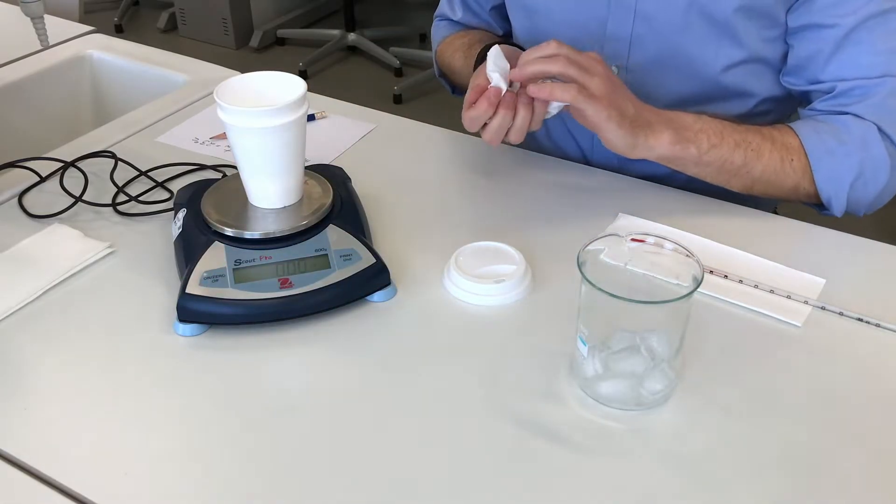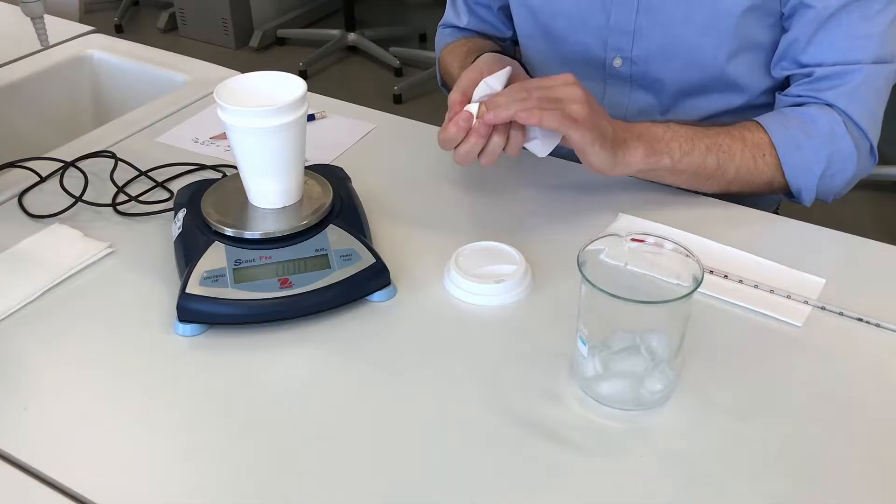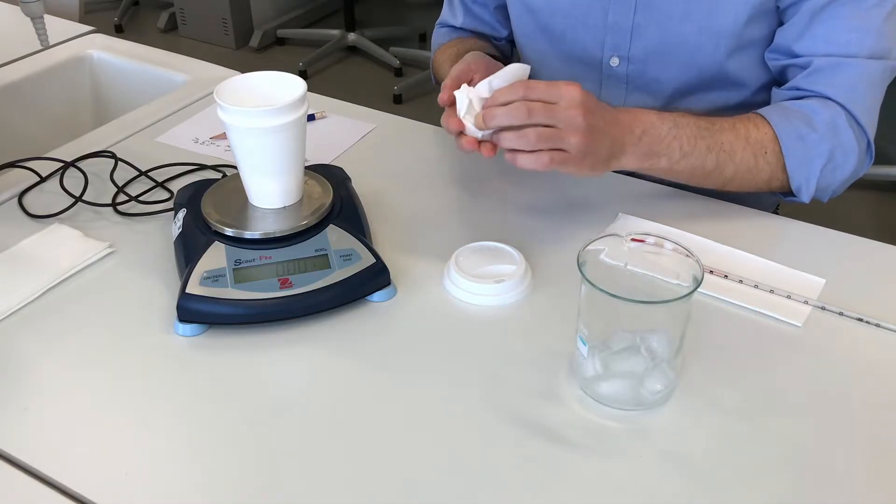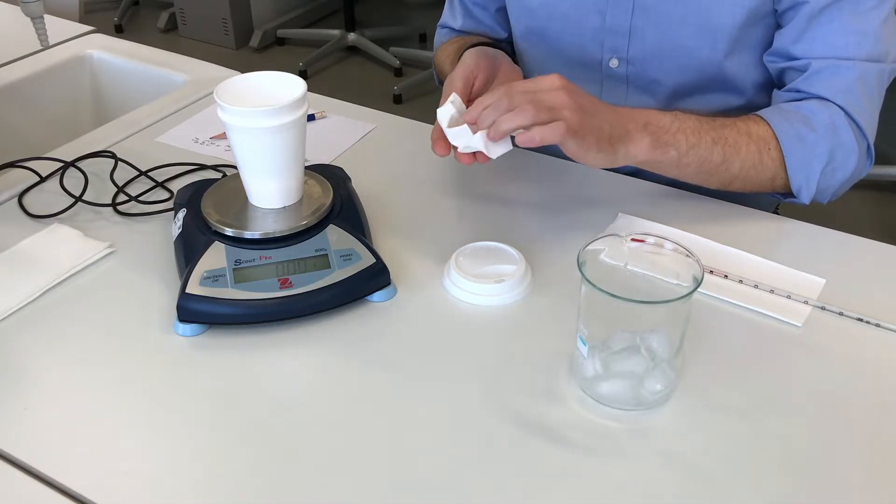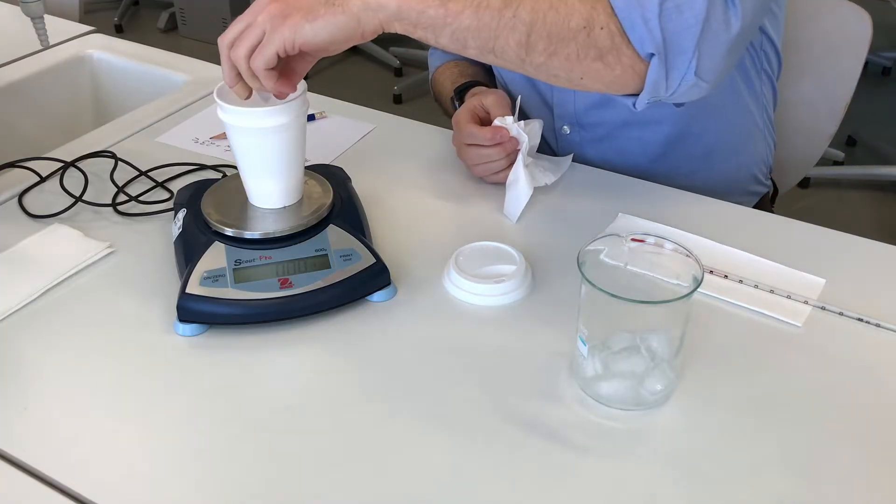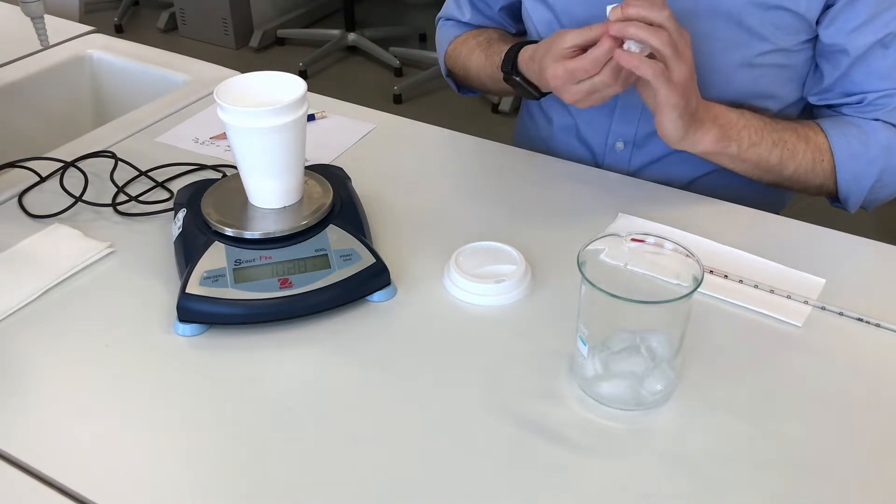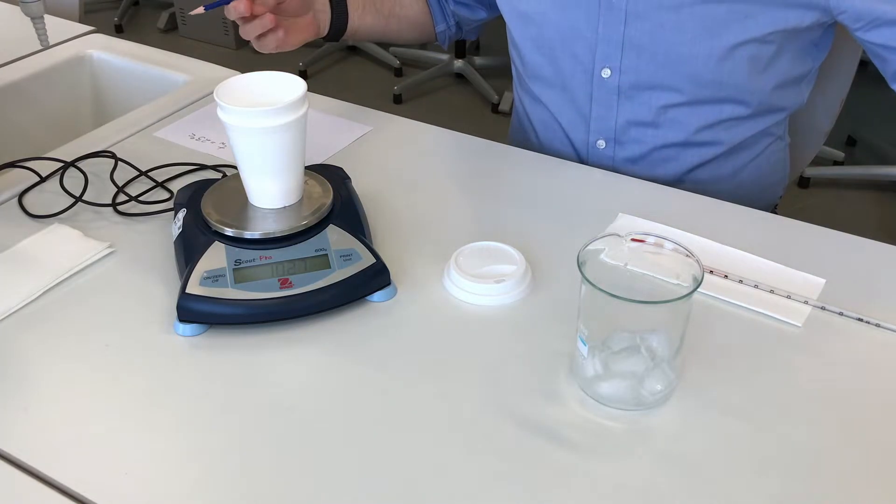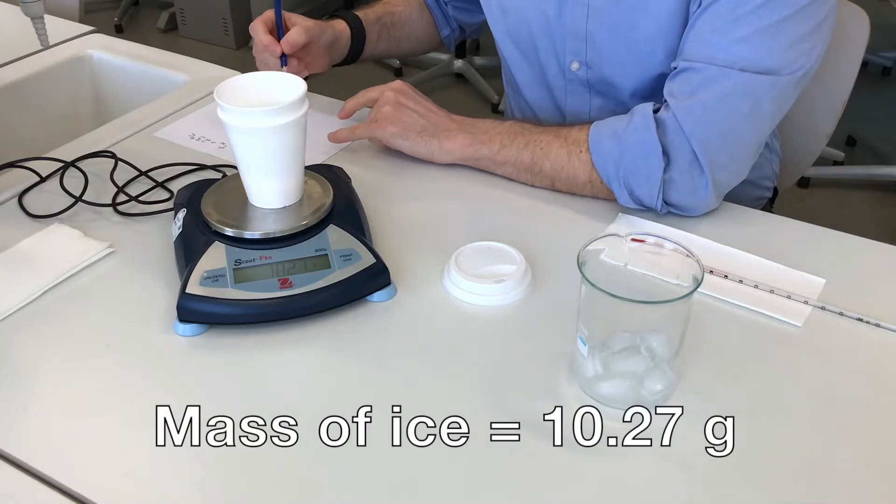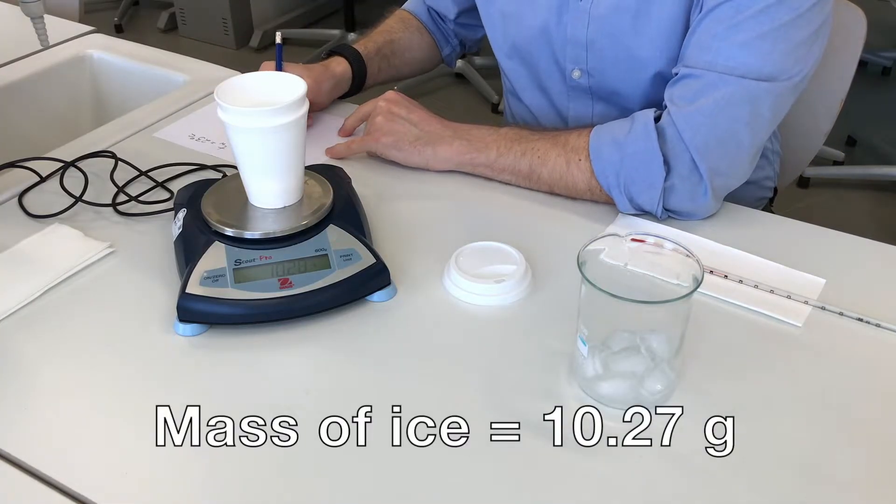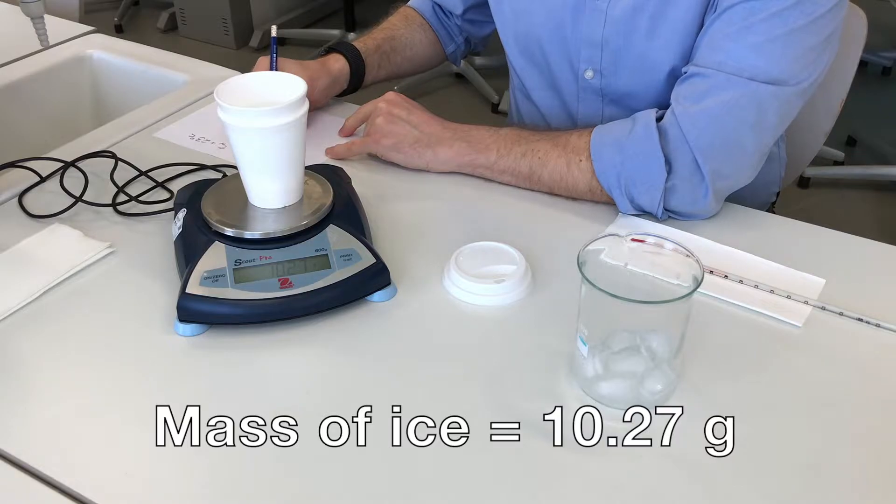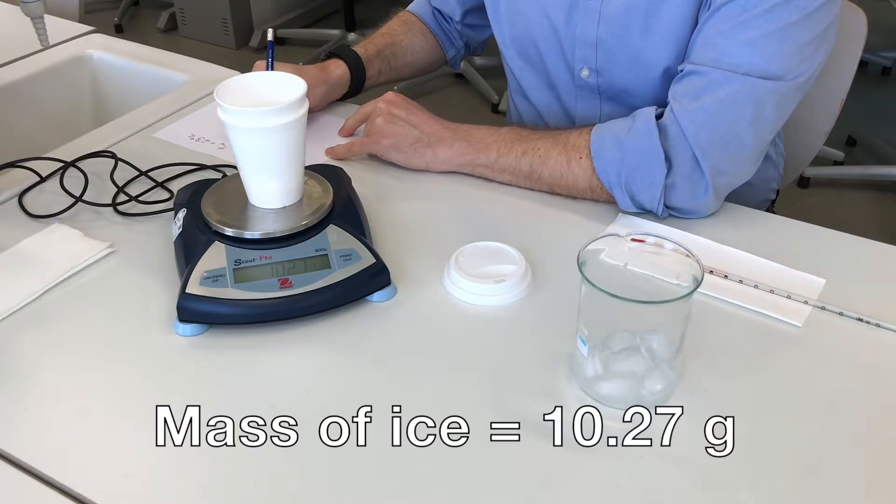I'm going to tare the balance again. So the mass of ice is 10.27 grams.